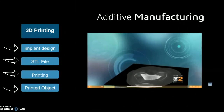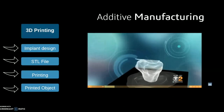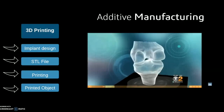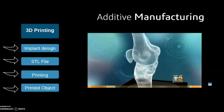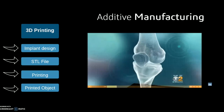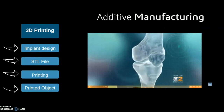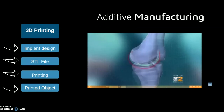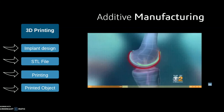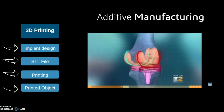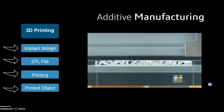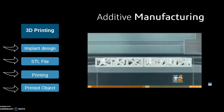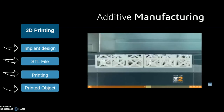3D printing, or additive manufacturing, begins with your implant design. Generated using design software such as SolidWorks, it is then transferred to an STL file and uploaded to the 3D printer. The 3D printer will then print and develop the implant as designed.